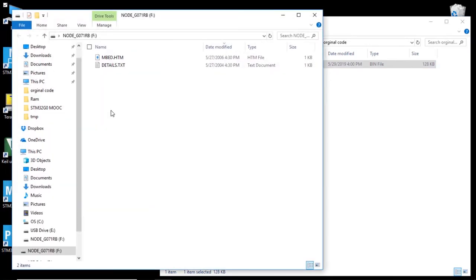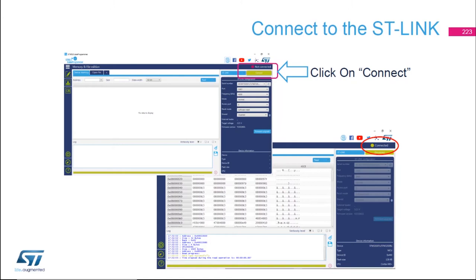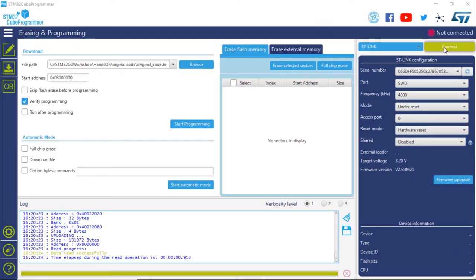The third method uses the STM32G0 system memory bootloader. Every STM32G0 comes with a system memory bootloader which is read-protected, so it's always there and can be accessed through different peripherals like UART, SPI, I2C, and others. In this lab, we're going to access it using UART. First, go back to STM32CubeProgrammer and connect again using the ST-Link connection to program the option bytes so we can boot from the system memory bootloader.